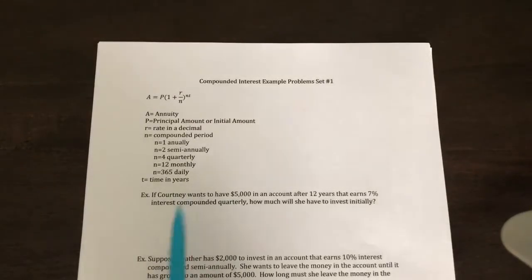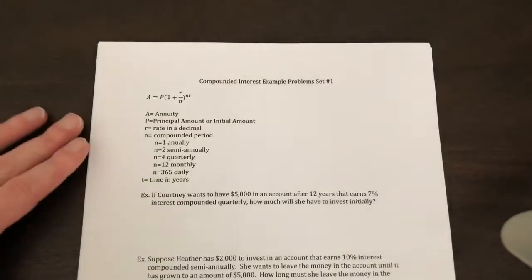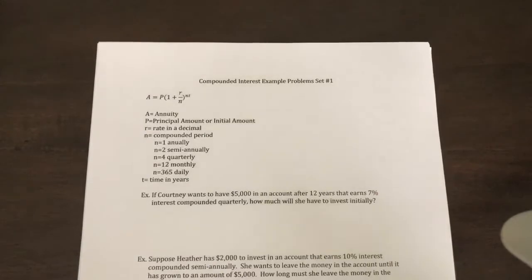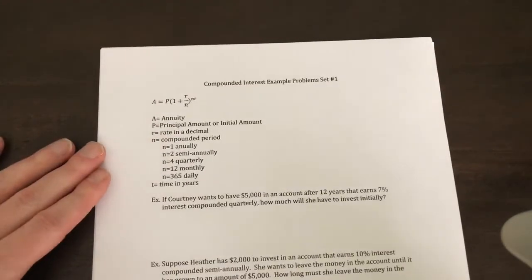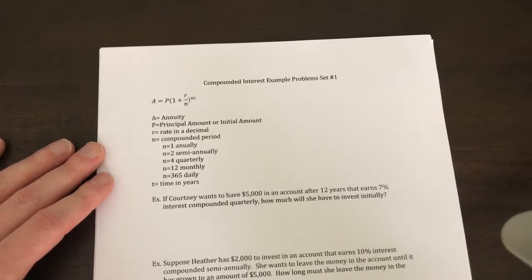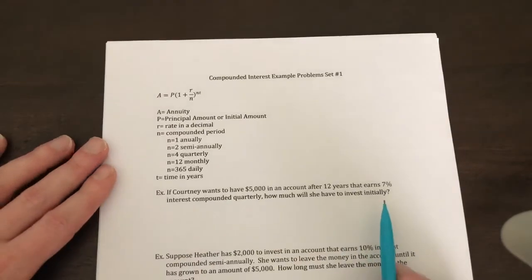And your T is always in years. So let's get started with the example problems. You're going to need your calculator for this. If Courtney wants to have $5,000 in an account after 12 years that earns 7% interest compounded quarterly, how much will she have to invest initially? So she's looking for P.